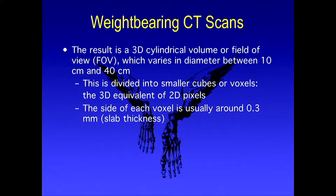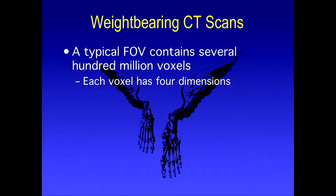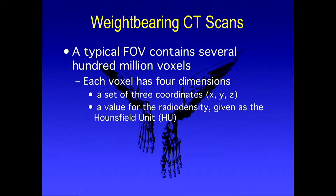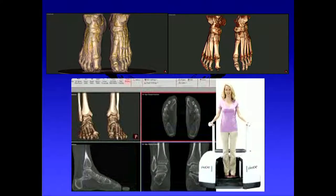Each voxel side is about 0.3 millimeters. Resolution depends on the density of receptors in the target panel as well as the software and memory used. A typical field of view contains about 100 million voxels, and each one has four dimensions: X, Y, Z, plus a Hounsfield unit representing density. That Hounsfield unit is what allows you to change the image and get skin, bone, bone quality, and even some tendons. The acquisition time is very quick, and this capability is what enables the different 3D reconstructions you can generate.